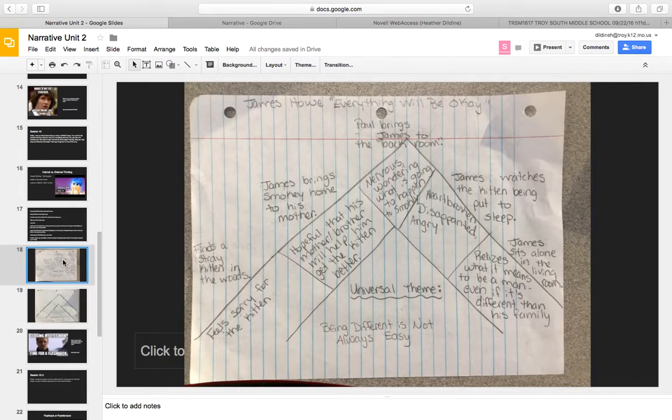Let me give you an example from our mentor text, Everything Will Be Okay by James Howe. If you take a look at this, you can see how on the top I have the exposition, the rising action, the climax, the falling action, and the resolution.